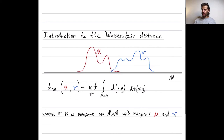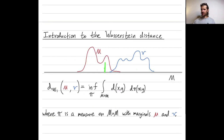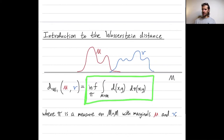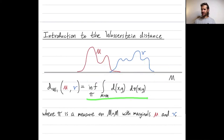For this particular example, what would your transport plan look like? This mass you would match here, and maybe this mass gets mapped here, this mass might get mapped there, and this mass gets mapped here. Mass on the left side of mu is going to be matched with mass on the left side of nu, and mass on the right side of mu is going to be matched with mass on the right side of nu. The total cost, or the Wasserstein distance, is given by looking at the optimal transport plan and multiplying how much mass you're moving times how far you moved it, integrated over all of the matched mass.